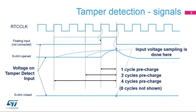This figure illustrates tamper detection using the internal pull-up. The internal pull-up can be applied for 1, 2, 4, or 8 cycles. If the switch is opened, the level is pulled up by the resistor. If the switch is closed, the level remains low. The input voltage is sampled at the end of the pre-charge pulse.